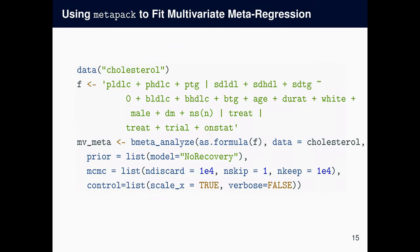So this is an example code for multivariate metaregression. I'm not going to actually run it because it typically takes quite a bit of time to get the output, but the gist is to correctly specify our model as a formula. So we've seen this before. The first part is the endpoints, the second, standard deviations. The first part of the right-hand side is the fixed effects, and at the end, don't forget to add this NS. And then treat is the random effects. Also, there is this one, so the intercept. And the last is treatment indicators, trial indicators, and ONSTAT is the grouping variable. And pass that F as the first argument of bmetanalyze. Prior has this model, no recovery, but you can change this to whatever model of sigma_KT as you see fit for your data. And MCMC: discard, skip, and keep. Control.